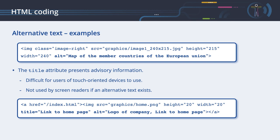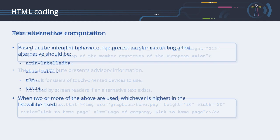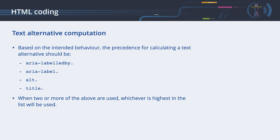The title attribute presents advisory information. Most browsers render the content of the title attribute as a pop-up, which appears when the mouse pointer rests over the element. Please note that while a title attribute can be helpful, it is difficult for users of touch-oriented devices to use. The content of the title attribute is not used by screen readers if an alternative text exists. This leads us to the question: what information is used by a screen reader when reaching for an alternative text? Based on the intended behaviour, there is a defined precedence for calculating a text alternative. When two or more of these are used, whichever is highest in the list will be used.